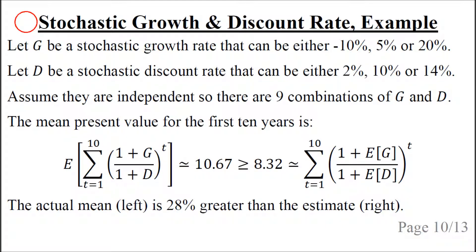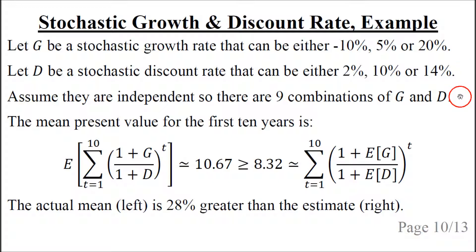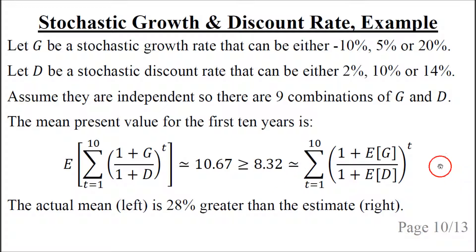Now let's see an example where we have both a stochastic growth rate and a stochastic discount rate. The stochastic growth rate can be either minus 10%, 5%, or 20%, and the stochastic discount rate can be either 2%, 10%, or 14%. Assuming they are independent, there are a total of 9 combinations. The actual mean present value is about 10.67, and the estimated mean present value — calculated from the mean growth rate and mean discount rate — is about 8.32. So the actual mean is about 28% greater than the estimate.